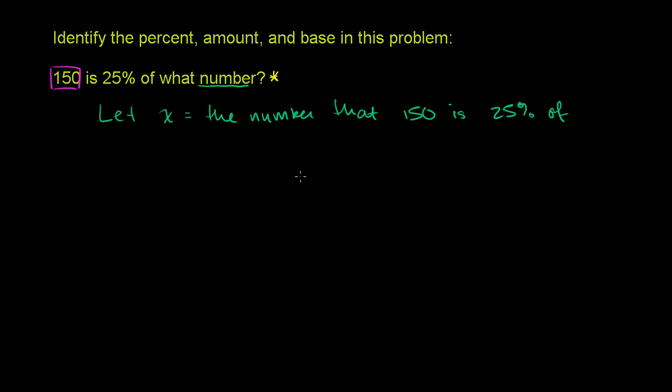So that tells us that if we start with x and if we were to take 25% of x, so 25% of x, you can imagine that's the same thing as multiplying it by 25%, which is the same thing as multiplying it if you view it as a decimal, times 0.25 times x.